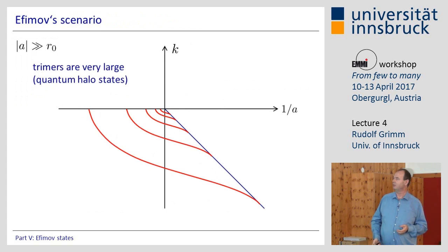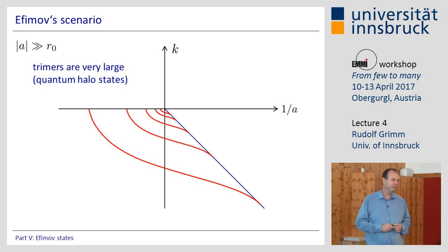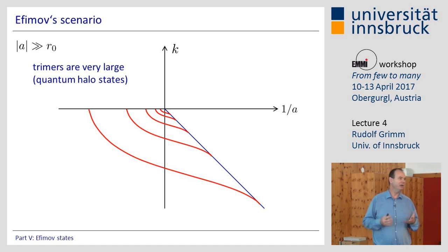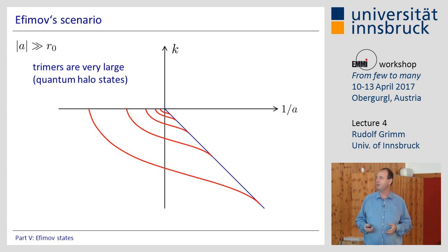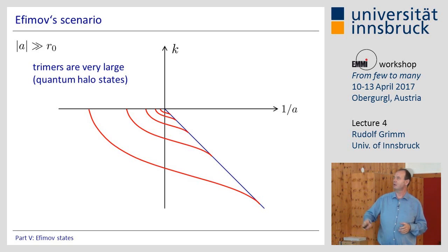Getting back to my drawing, which is essentially the same: one thing is that these trimer states are in this halo world. These are the quantum halo states introduced before — not a two-body but a three-body halo state. At least in that region there is a very strong halo character.